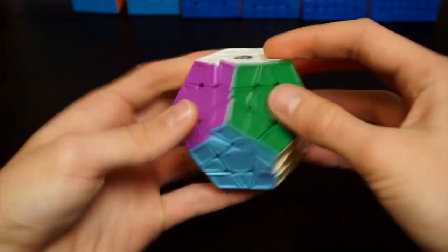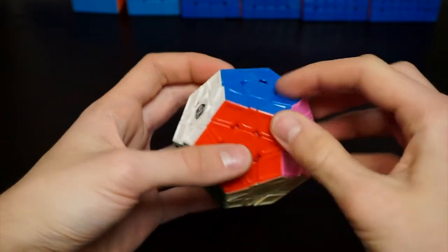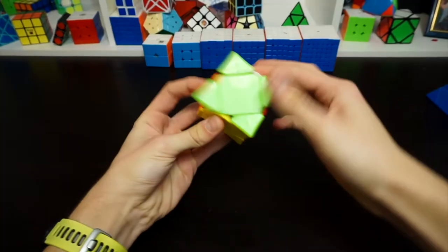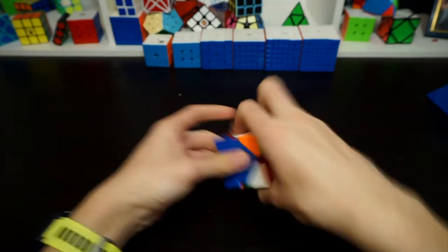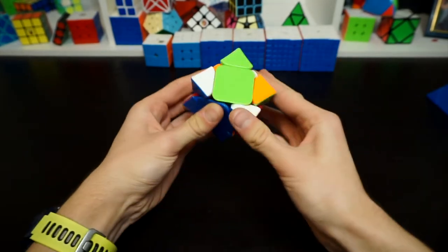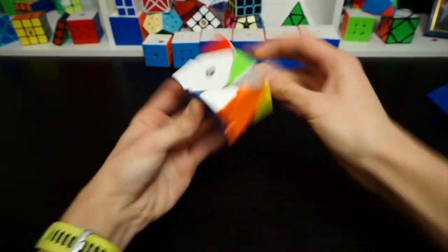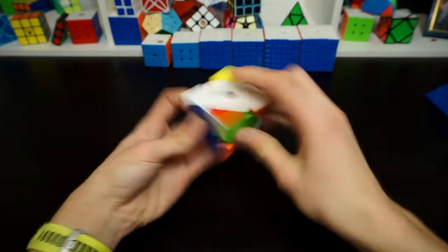So next up for Megaminx I'll be using the Galaxy version 2. My goal is to get a PB. Maybe sub 120 average. I'll be happy. So here we have skewb. I'll be using the X-Man wingy. And my goal is to get a sub 5 average finally. Maybe I'll try. Maybe I'll get it.